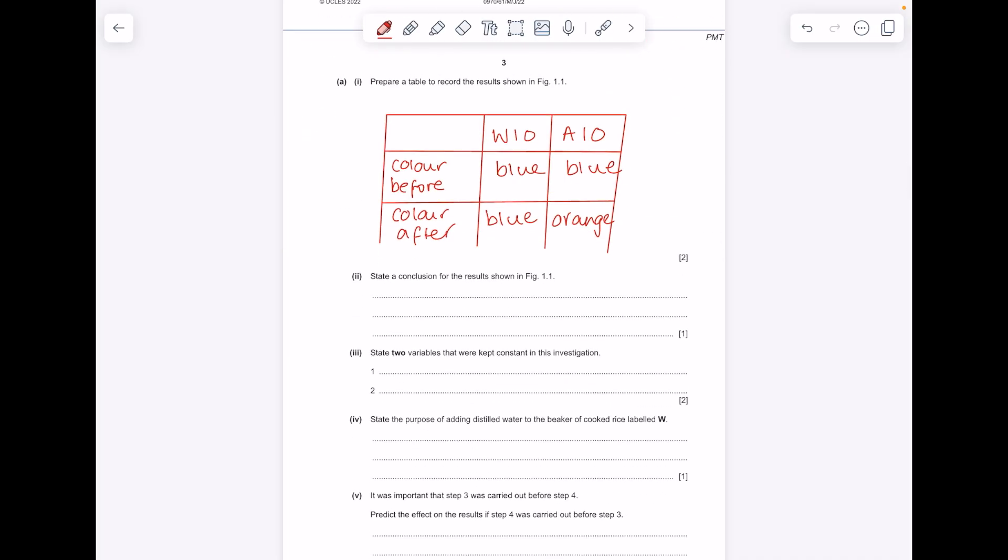Now we're being asked to state a conclusion for the results shown in figure 1.1. We know that amylase, I've already written this, breaks down the starch in rice to produce reducing sugars, as seen in A10.